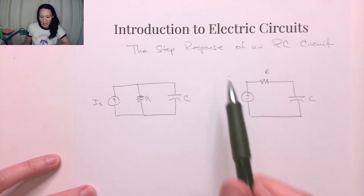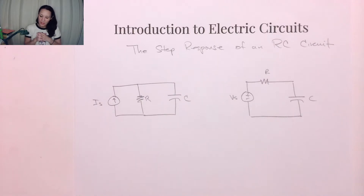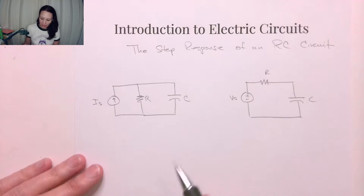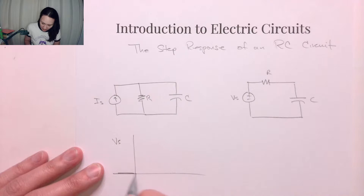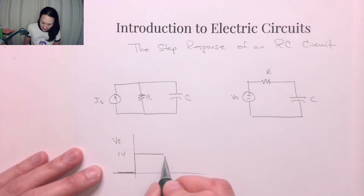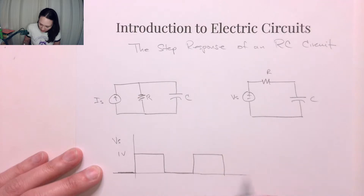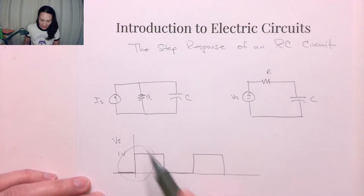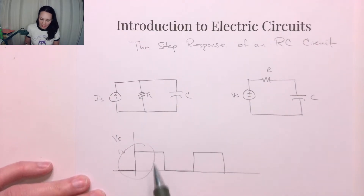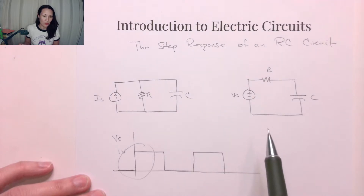We're going to be looking at the step response. The idea is: what's going to happen in this circuit if we apply a step input? A step input looks like this — if our source starts at zero and then at some time goes up to some value, like one volt. You might see that square waves are actually a series of step functions like this. So if we just look at one of these cycles,